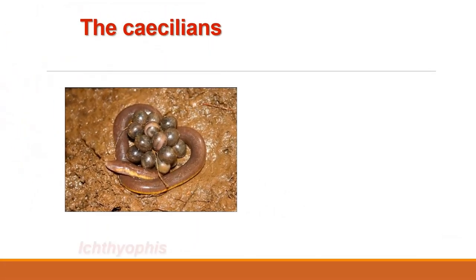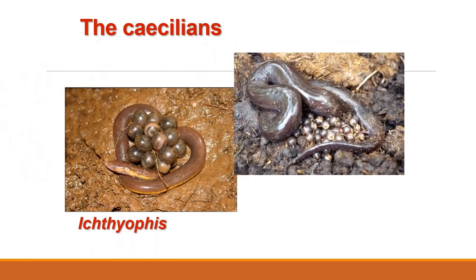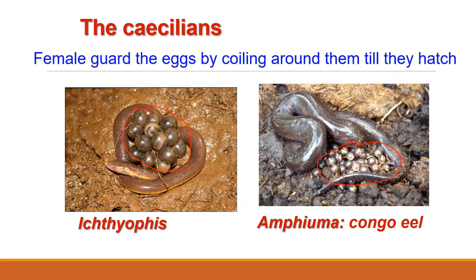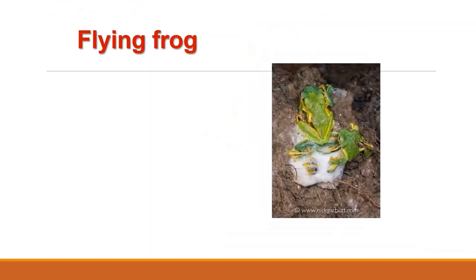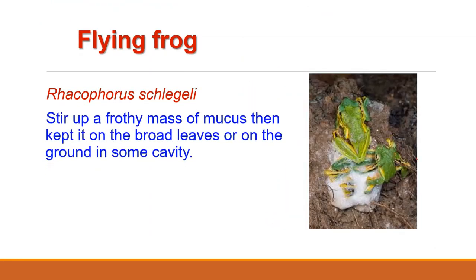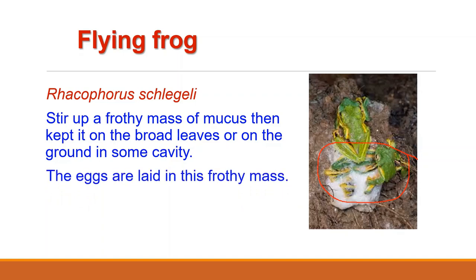The Caecilians, for example female Ichthyophis and Congo eel Amphiuma, guard the eggs by coiling around them till they hatch. Some species of flying frogs, for example Rhacophorus, stir up a frothy mass of mucus and place it in broad leaves that are then folded and glued together to place this frothy mass in some cavity in the ground near the water.